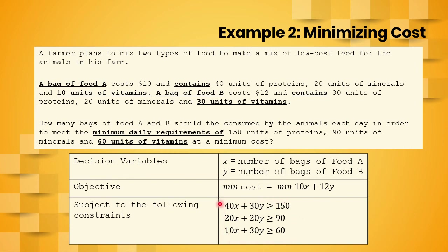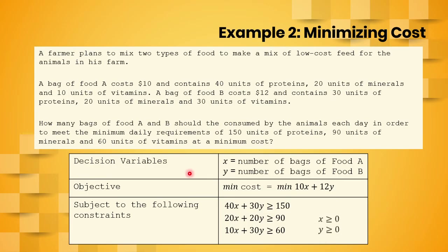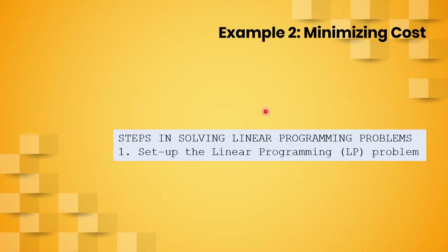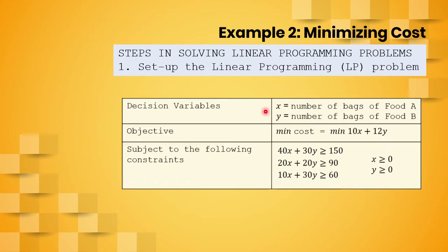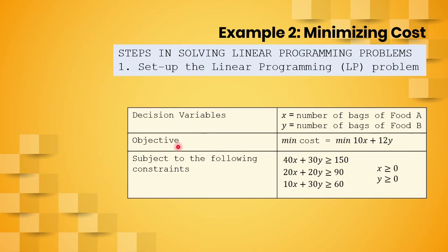There are also constraints not explicitly mentioned in the problem. Since x represents the number of bags of food A and y represents the number of bags of food B, both x and y cannot be negative. So we include the non-negativity constraints. This completes the linear programming model. We have set the decision variables, identified the objective function, and enumerated the constraints.